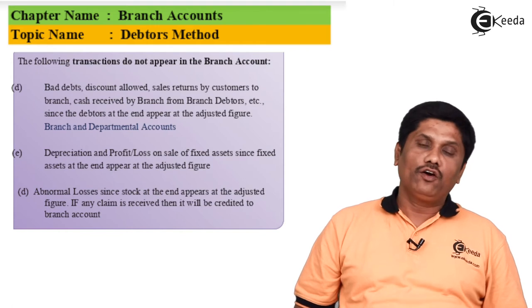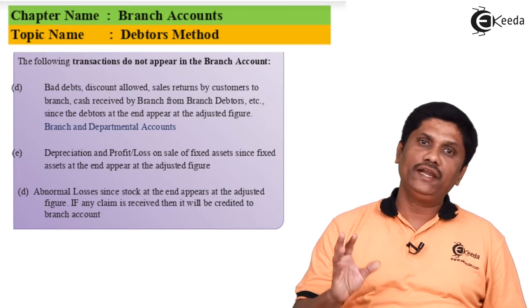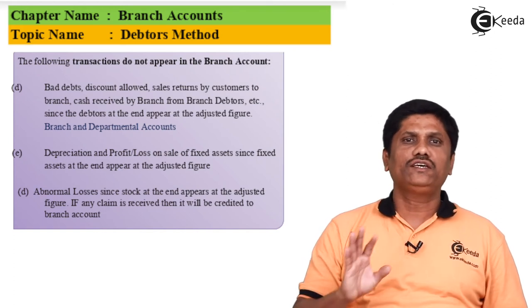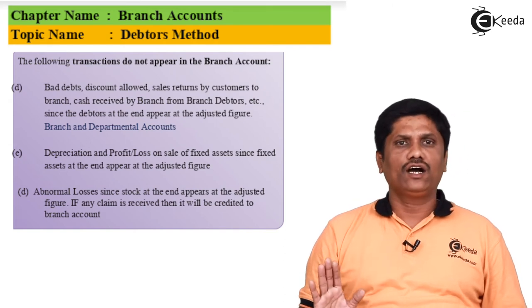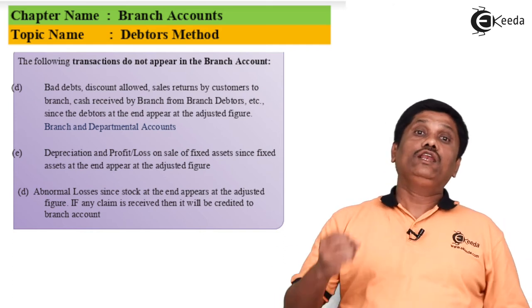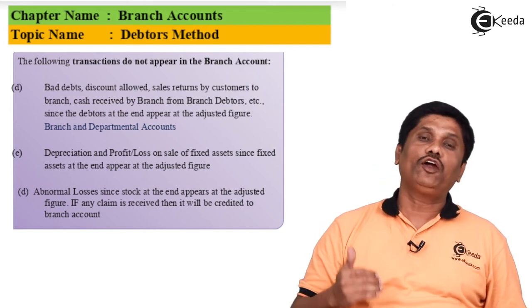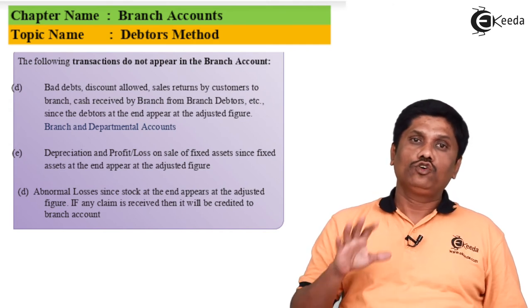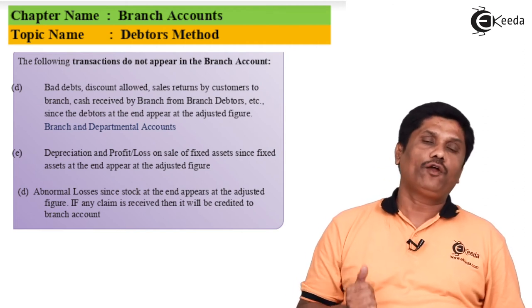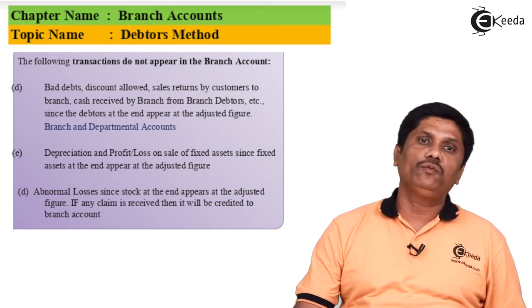Depreciation on fixed assets will not be recorded separately in the branch account — original cost is debited and WDV is credited, so depreciation is implicitly captured. Similarly, profit or loss on sale of a fixed asset by the branch need not be recorded separately; simply credit the selling price in the branch account and profit or loss is automatically taken care of. Abnormal losses such as loss by fire or theft are not recorded in the branch account either, because the amount automatically adjusts in the branch's stock. However, if an insurance claim amount is received, that claim amount can be credited to the branch account, which will increase branch profit or reduce branch loss.